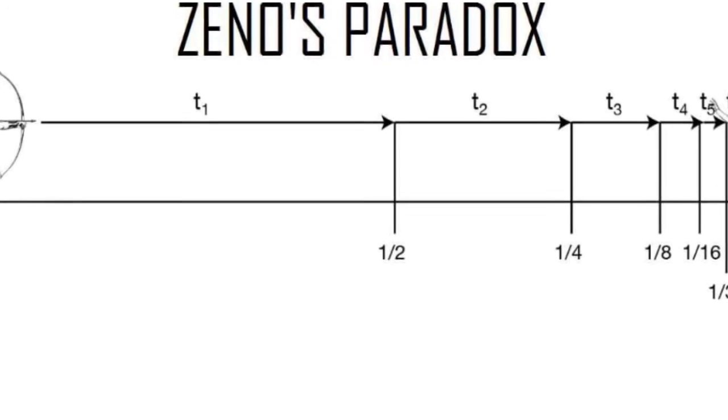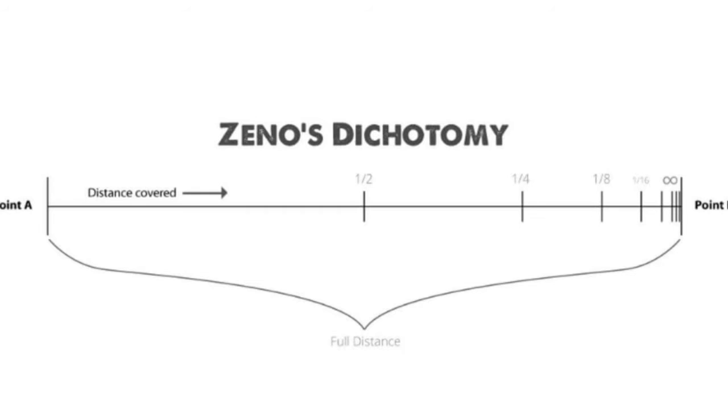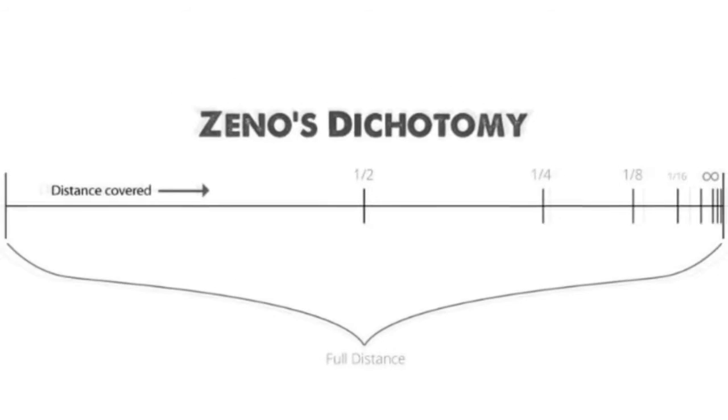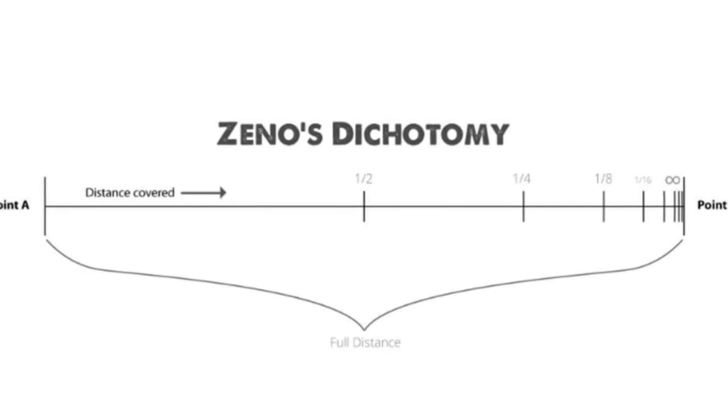Otherwise, the archer's paradox would hold true, and nothing would ever make it to anywhere. So to recap, the paradox supposes that the distance between any two points can be halved infinitely, making movement between any two points seem impossible.